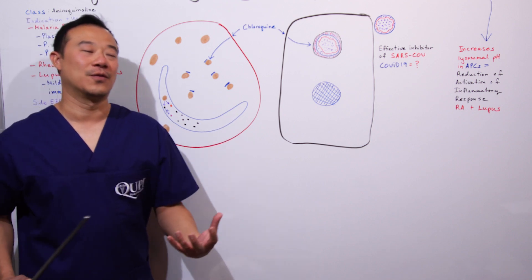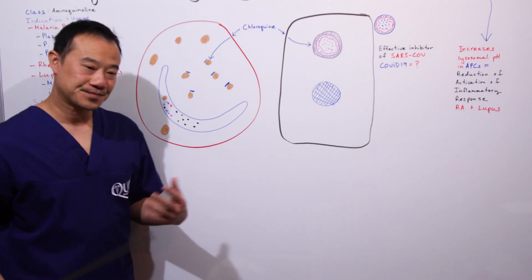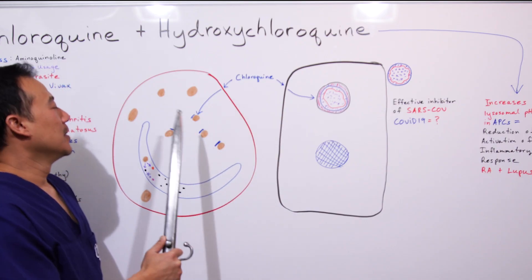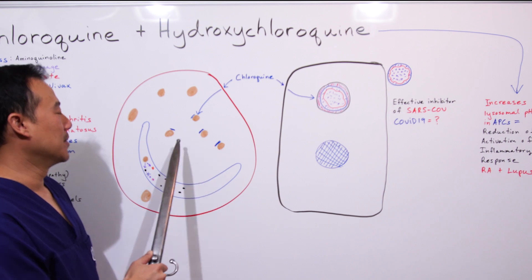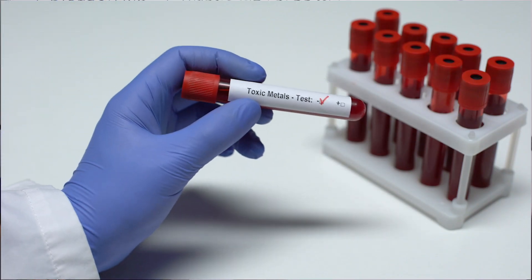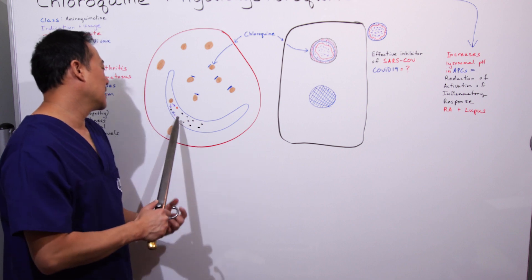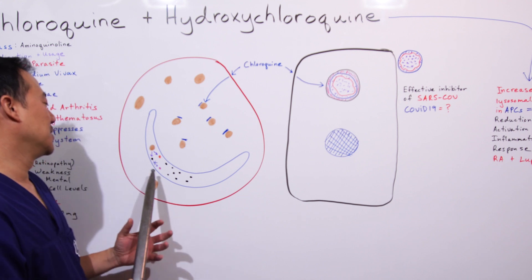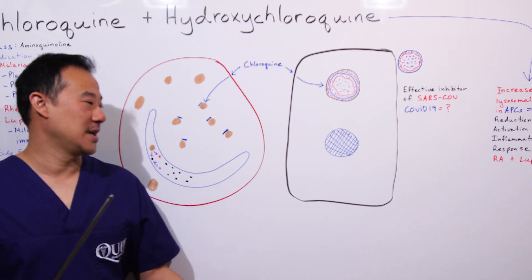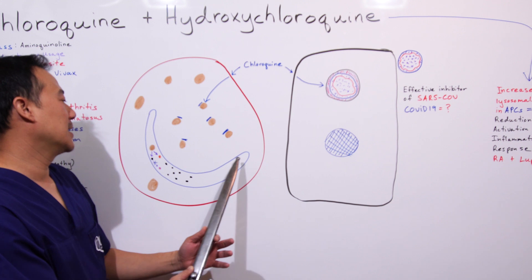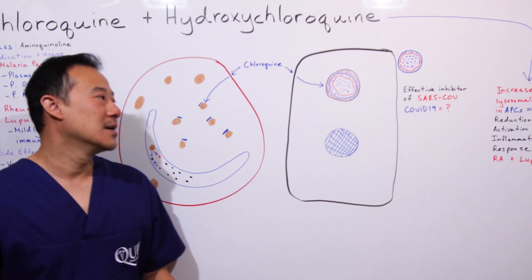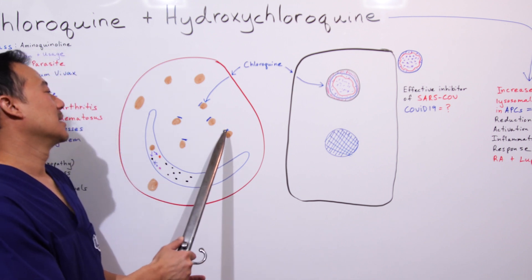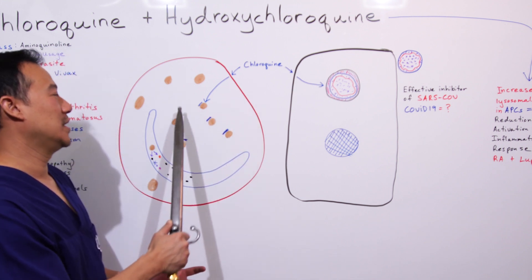Here's what happens: the heme broken up from hemoglobin is black and really toxic—it's iron toxicity. The parasite converts this into a bio-crystallized form, which is pink. Here's where chloroquine comes in. Chloroquine enters the cell and it caps off all the hemoglobin, making the hemoglobin very toxic, and it prevents this conversion of the toxic heme into the safe bio-crystallized form.